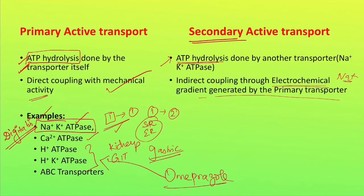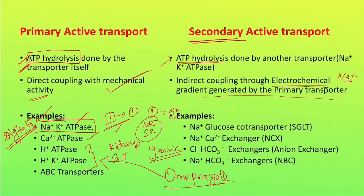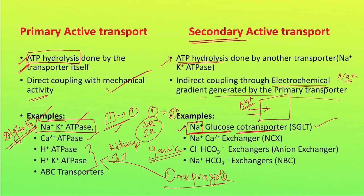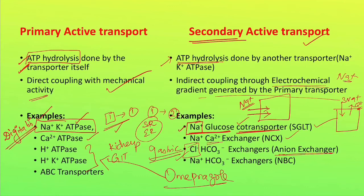Examples of secondary active transporters include the sodium-glucose co-transporter. A co-transporter means both molecules are transported in the same direction — sodium is the driver ion, and sodium's concentration gradient (higher outside) is utilized to transport glucose together through the same transporter inside the cell. That is why it is called a co-transporter, and it does not use energy directly, making it secondary active transport. If an ion moves in the opposite direction to the driver ion, we call it an exchanger. In the sodium-calcium exchanger, three sodium ions enter the cell while one calcium ion goes out. There is also an anion exchanger where the driver ion is chloride, not sodium, and the sodium-bicarbonate exchanger (NBC) where sodium enters the cell and bicarbonate goes out.